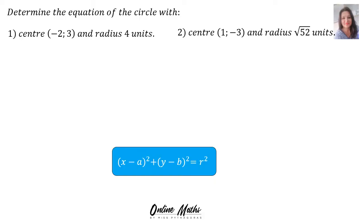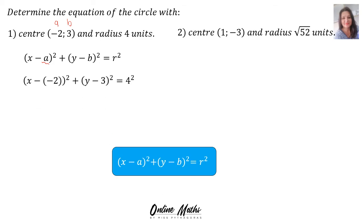Let's do an example. Determine the equation of the circle with center (-2, 3) and radius 4 units. Since the center is (-2, 3), a's value is negative 2 and b's value is 3. Into our formula, in a's place we substitute negative 2 — please note the use of the bracket since a was negative. Plus y minus 3: since 3 was positive, it isn't really necessary to use a bracket there.